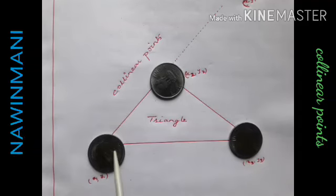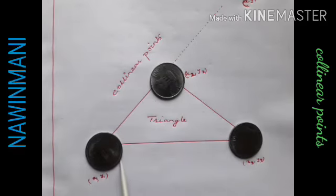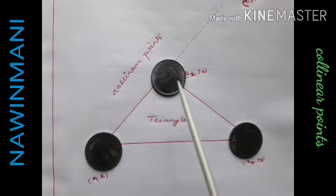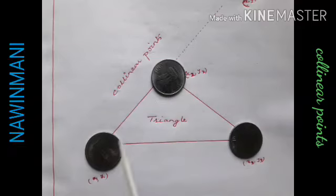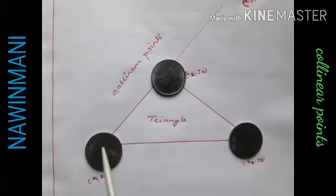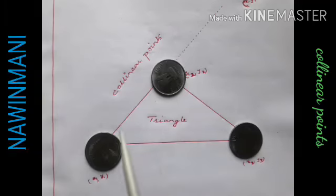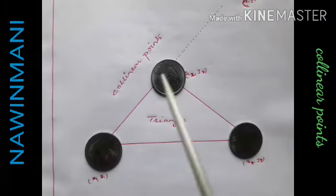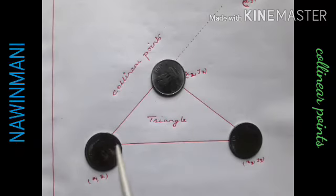Okay, if I join them like this, these three points will form a triangle. So these three points become the vertices of the triangle when they are not lying on a line.